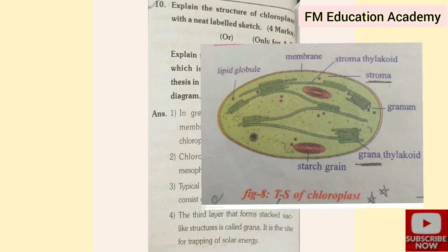Question 14: explain the structure of chloroplast with a neat labeled diagram (8 marks). Draw the structure of chloroplast showing stroma, grana, starch grain, loop of DNA, lipid globule, and membrane — neat with labels. First point: in green plants there are special membrane-bound organelles called chloroplasts. Chloroplasts occur mainly in the mesophyll cells of leaves. Typical chloroplasts are disc-shaped and consist of three membranes.